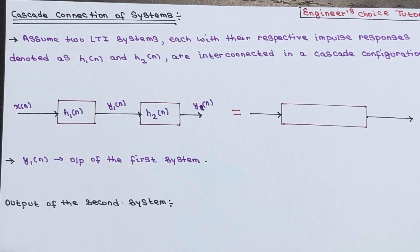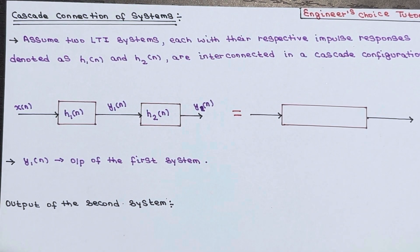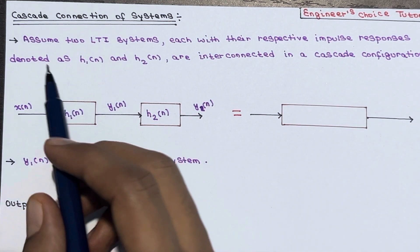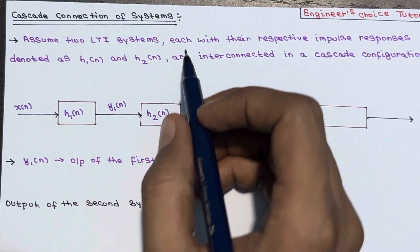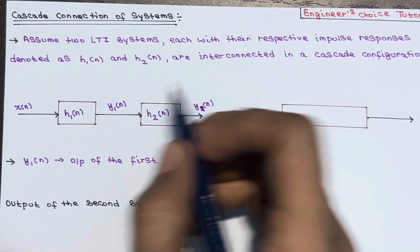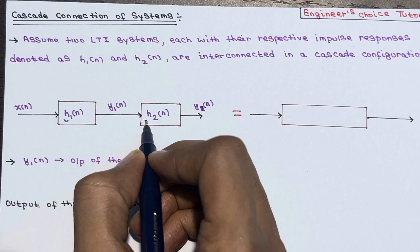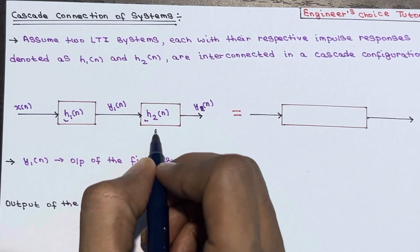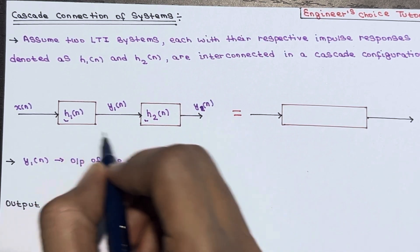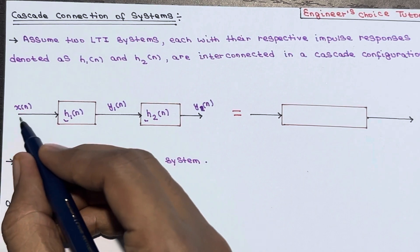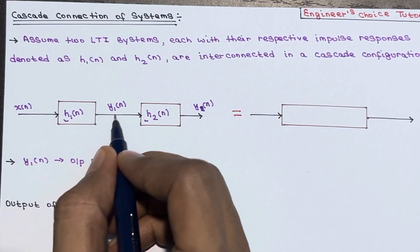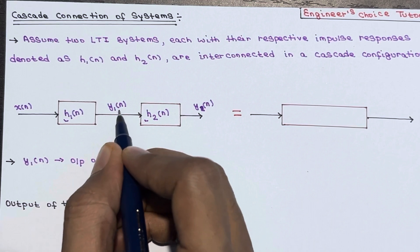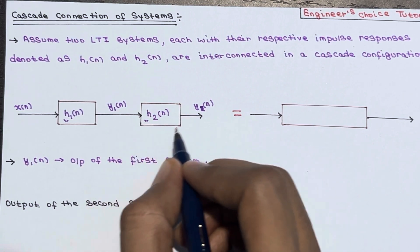In this lecture we are going to talk about cascade connection of discrete-time systems, or cascade connected discrete-time systems. Assume that two LTI systems, each with their respective impulse responses h1(n) and h2(n), are interconnected in a cascade configuration. Assume the input is x(n). The output from the first system is denoted as y1(n) and the output from the second system is denoted as y(n).